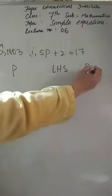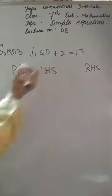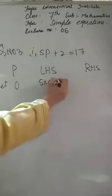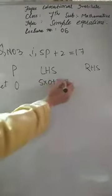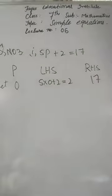I have told you how to use the trial and error method. Now we will see how to do it. We set up a table with P, LHS, and RHS. Let's say P is 0: 5 into 0 plus 2 equals 0 plus 2, which is 2. And the RHS is 17.